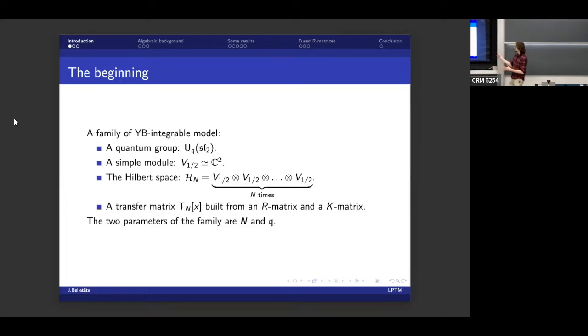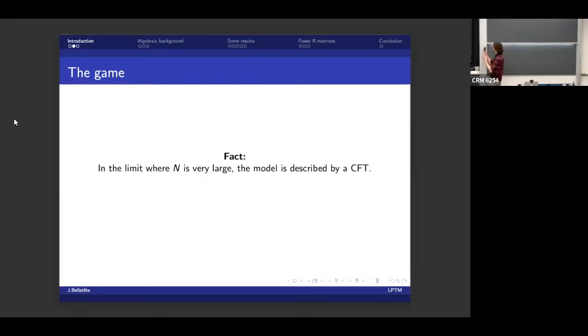Now this family has two parameters. There's n, which controls the size of the lattice, and then there's q, which is the deformation parameter of the quantum group. So today I'm going to assume that q is fixed. When I talk about a family of models, you should always assume that I'm talking about varying the integer n.